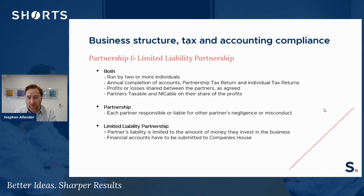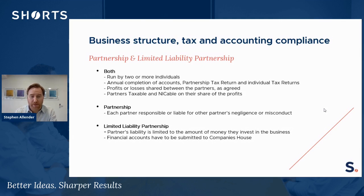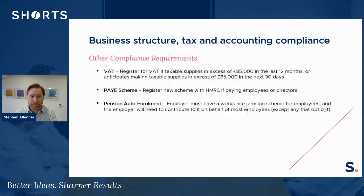A key difference between a sole trader or partnership and a limited company is that as a partnership or sole trader you pay tax on all your profits irrespective of whether you take that money, whereas with a company you can control the amount you take out and therefore what you're subject to tax on. Under a standard partnership, similar to a sole trader, partners are liable for the whole of the partnership's liabilities and also any other partners' negligence or misconduct. With an LLP, the partners' liabilities are limited to the amount they invest in the business at the outset, and financial accounts of an LLP must also be submitted to Companies House.